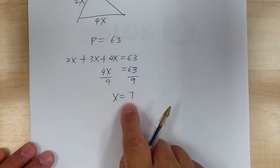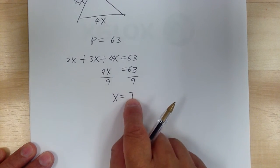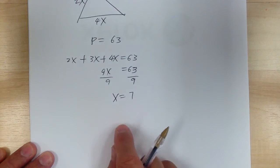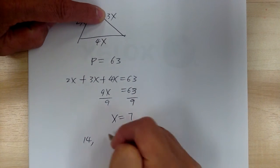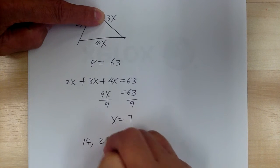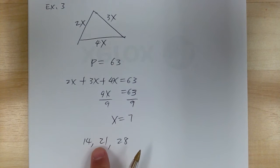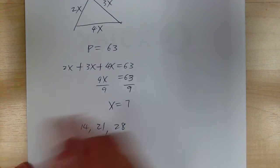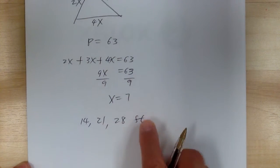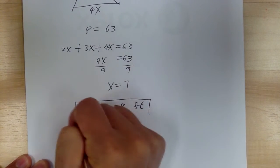Do not box x = 7 — this is not the final answer. The value 7 is the multiplier. So the first side 2x = 14, the second side 3x = 21, and the third side 4x = 28. Do not use a colon since the question asks for numbers, not a ratio. Also watch the label — the label is feet, so you need to add feet to your answer.